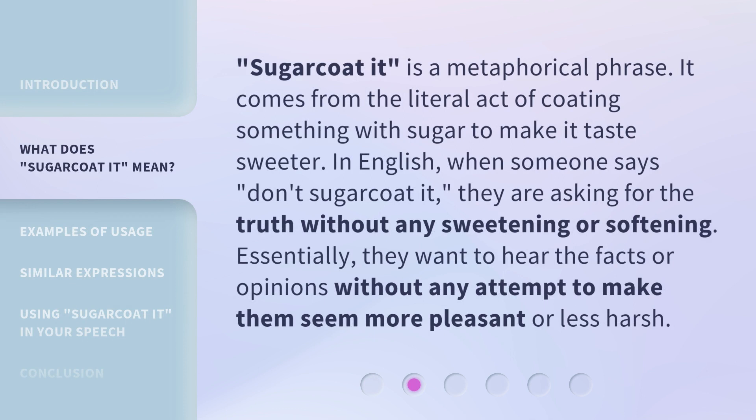'Sugarcoat it' is a metaphorical phrase. It comes from the literal act of coating something with sugar to make it taste sweeter. In English, when someone says 'don't sugarcoat it,' they are asking for the truth without any sweetening or softening. Essentially, they want to hear the facts or opinions without any attempt to make them seem more pleasant or less harsh.